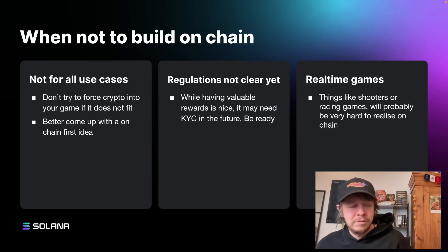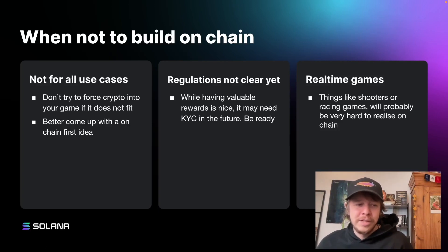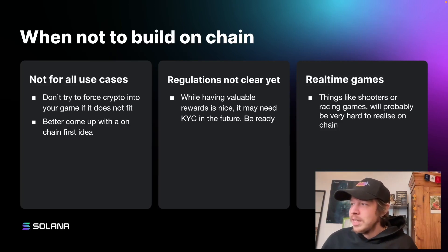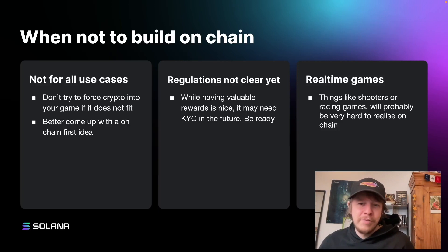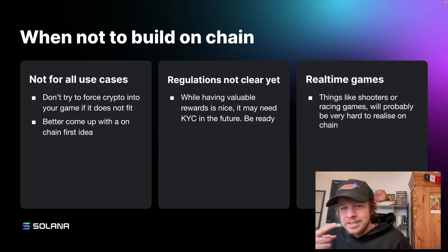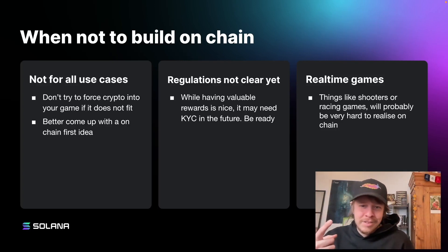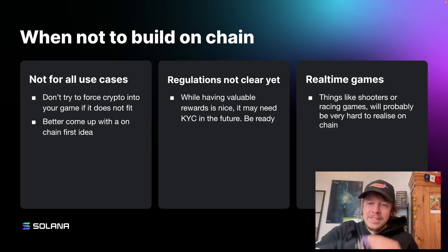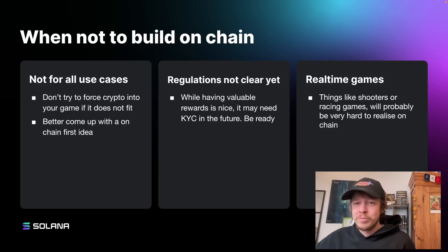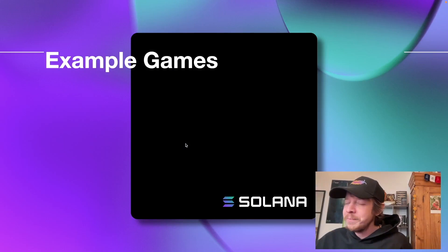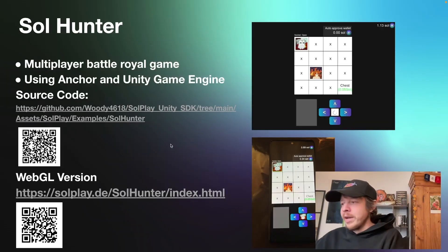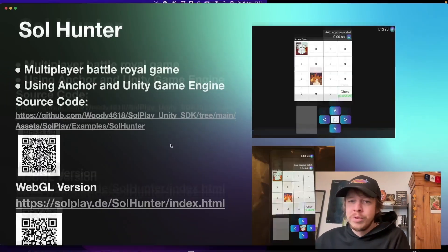It's also kind of hard to make real-time games on-chain because block times are 500 milliseconds — you can only have a confirmed state transition every 500ms. A shooter is probably too fast, but something like Worms where you set an angle and shoot a slowly flying rocket could still work on-chain.